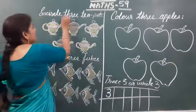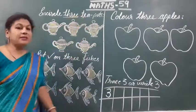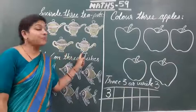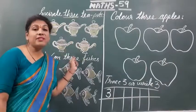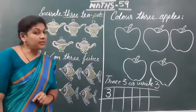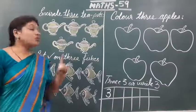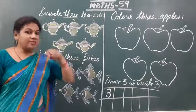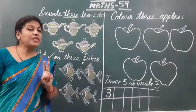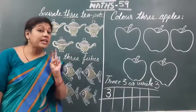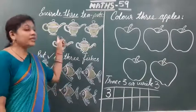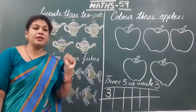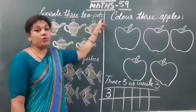यानि हमें क्या करना है? कोई से भी 3 teapots. Here is given 1, 2, 3, 4, 5 — 5 teapots are given there. 5 teapots यहाँ दिये हुए हैं और हमें उन teapots में से any 3 we will select and answer करना है। क्या है यह? Kettle है ना, जिसमें हम चाय रखते हैं गरम-गरम। इसको क्या बोलते हैं? Teapots.